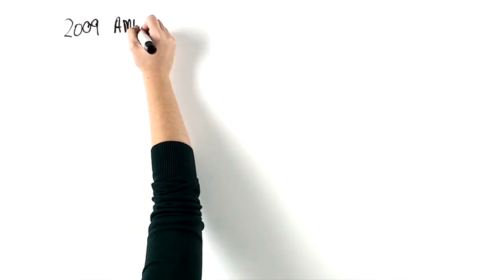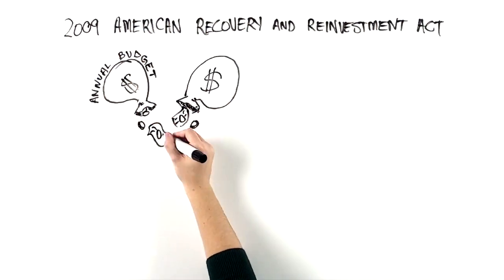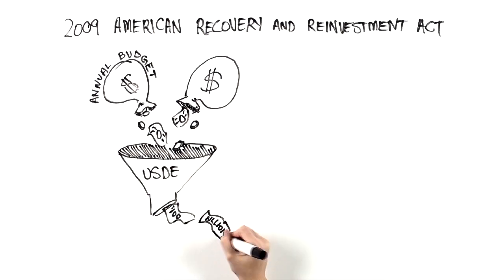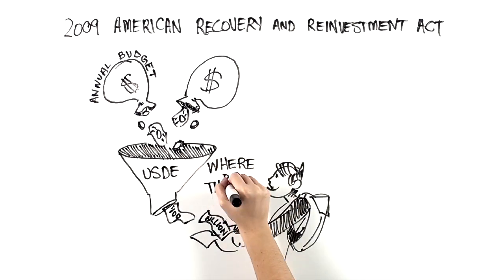Under the 2009 American Recovery and Reinvestment Act, nearly two times the annual budget of the Federal Department of Education, USDE, that's about $100 billion, was allocated to improve the nation's public school system. Where did the cash go?